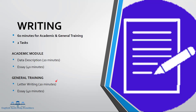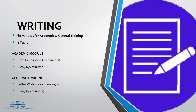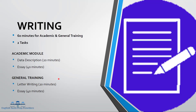For general training, you will be given 20 minutes to finish a letter — this is a business correspondence. Make sure you know whom you are writing to and that you have a good tone. Both academic and general training will have an essay for task 2, and you will be given 40 minutes to finish it.